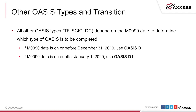For the other OASIS types — a transfer, a significant change in condition (SCIC), or a discharge — the M90 date determines which type of OASIS is to be completed. If you're completing a transfer OASIS on December 31st, 2019, your M90 date would be December 31st, 2019 and you use an OASIS D. If you're doing a discharge on January 1st or after, you must use an OASIS D1.